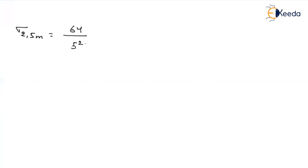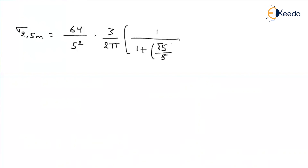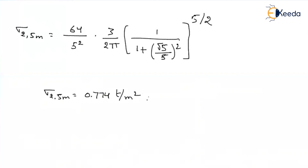Now find the stress at point 2 at a depth of 5m: σ = (64/5²) × (3/2π) × [1 / (1 + (√5/5)²)^(5/2)]. Solving this equation gives a stress of 0.774 tons per m². One important thing to remember: while Z is given directly, the radial distance R must be found from the top view of the footing — it is the horizontal distance from the load acting point to the point where stress is being found.